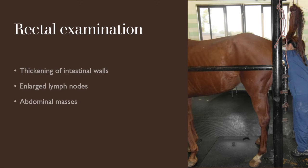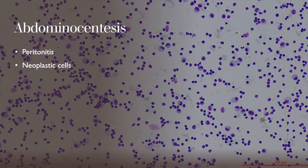If there is IBD, sometimes on rectal examination we can palpate thickened intestinal loops and also find enlarged lymph nodes at the mesentery. As clinical signs of IBD are also compatible with a neoplastic process, with the rectal exam we may find abdominal masses. During the workup of a suspected case of IBD we also need to perform an abdominal paracentesis to rule out peritonitis, and since neoplasia is also a differential, we may find neoplastic cells in the peritoneal fluid.